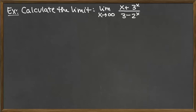To calculate the limit as X goes to infinity of the ratio X plus 3 to the X on top, over 3 minus 2 to the X on the bottom.